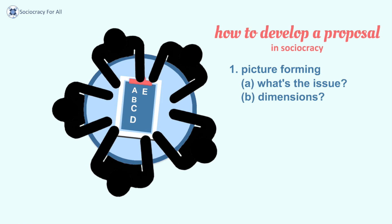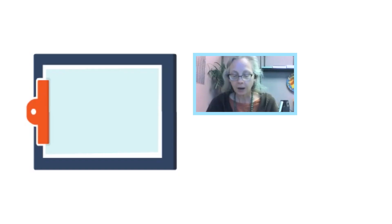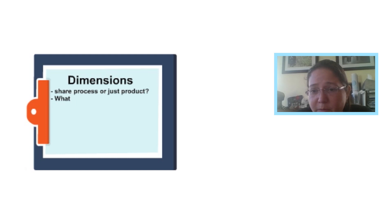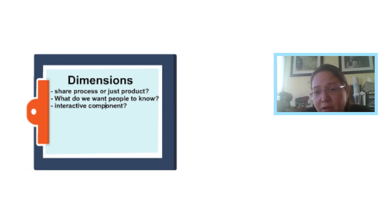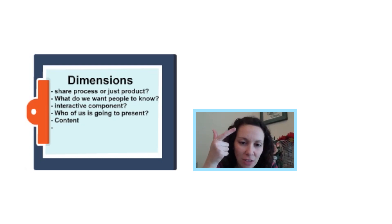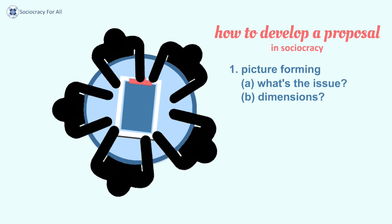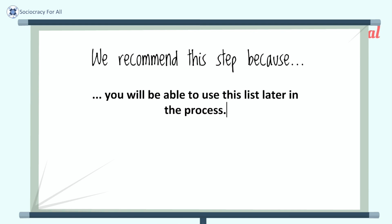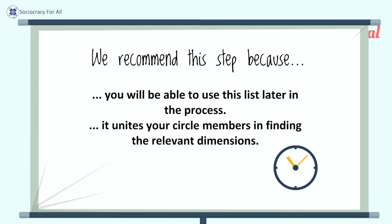In a moment, you will see a group doing that in one of our trainings, where they try to make policy around a presentation they were planning. They're coming up with the dimensions: Are we going to talk about the process we went through, or is it just the time to share our product? What do we want people to know about the case studies? Should we have an interactive component? Who should present? It is useful if the facilitator helps distill what the dimensions are — content, visuals, and who puts it together. This list unites the group early in the process before you go into different opinions.